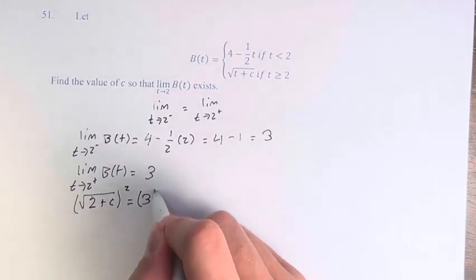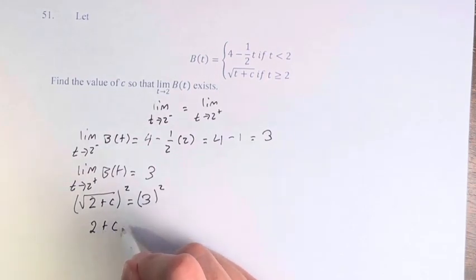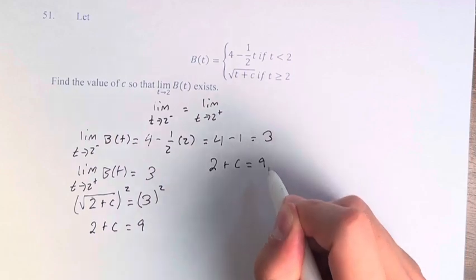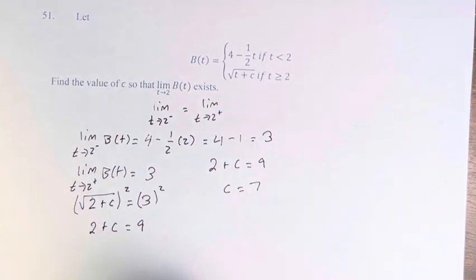Now we just have to solve this. We can square both sides. So we have 2 plus c equals 9. Just write it up here so it doesn't run off the page. We know that c equals 7.